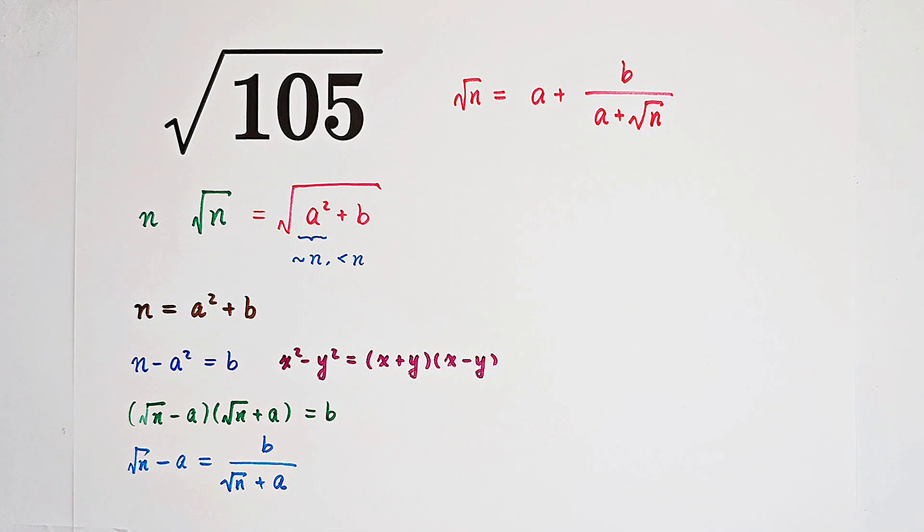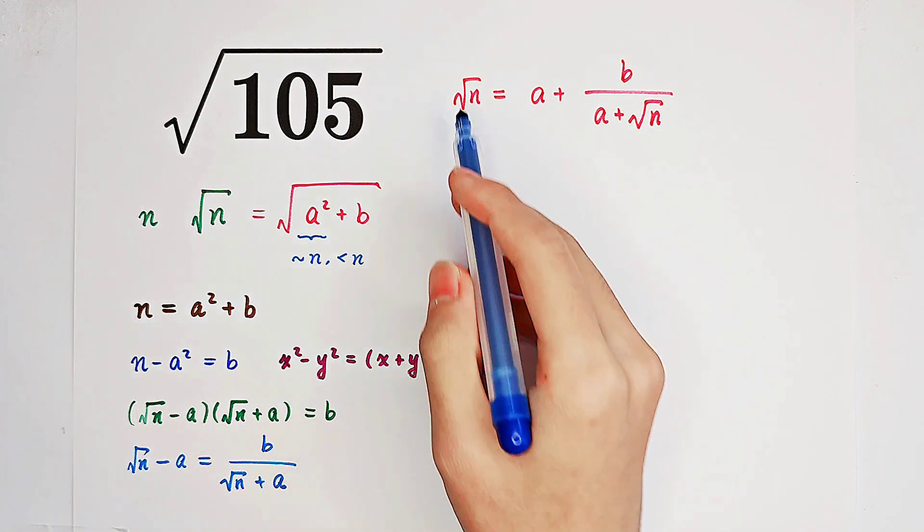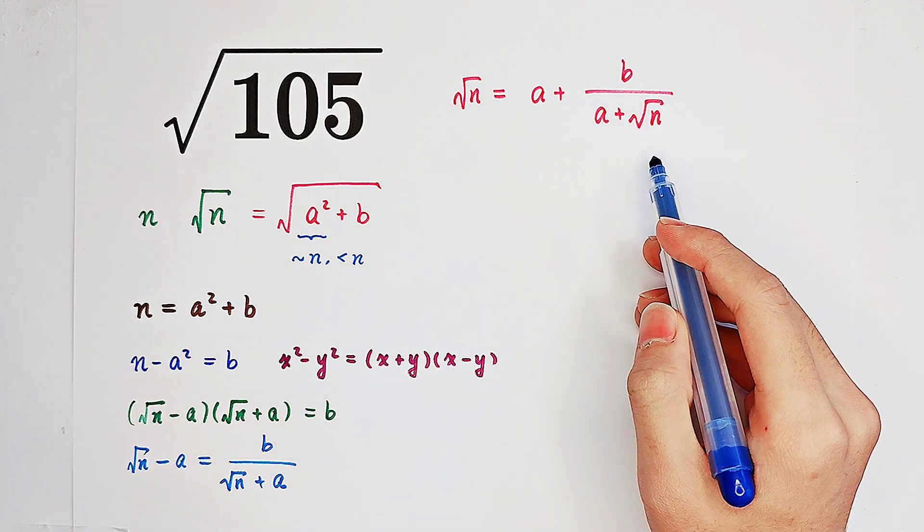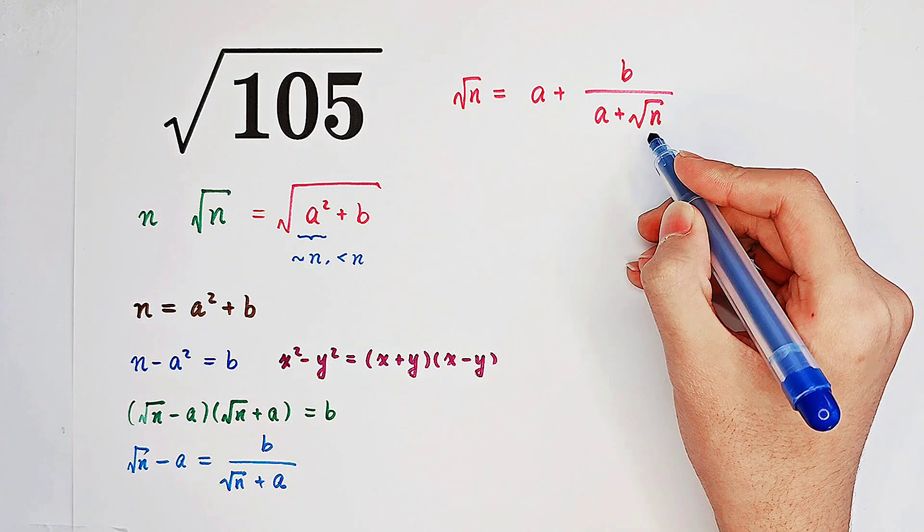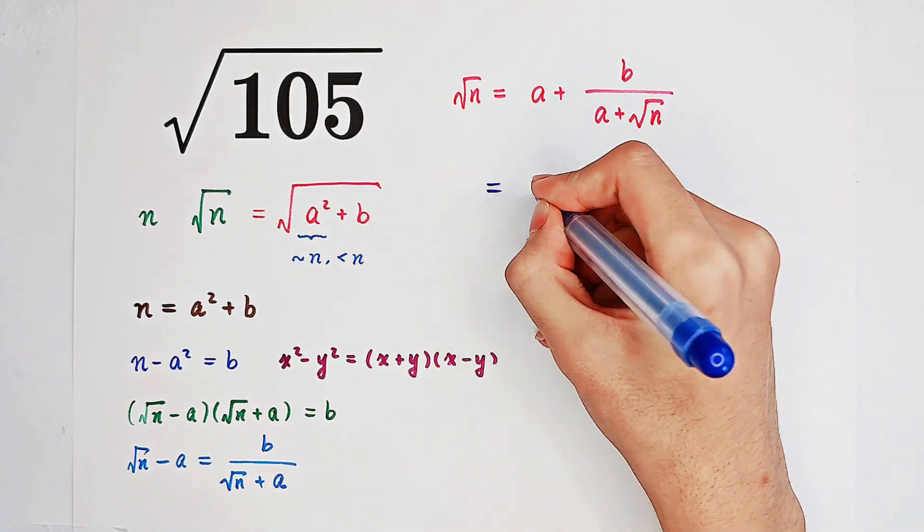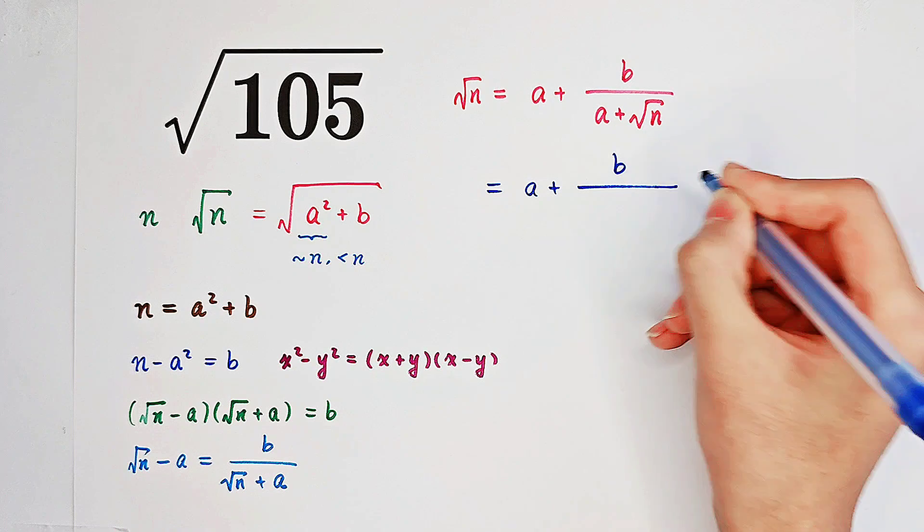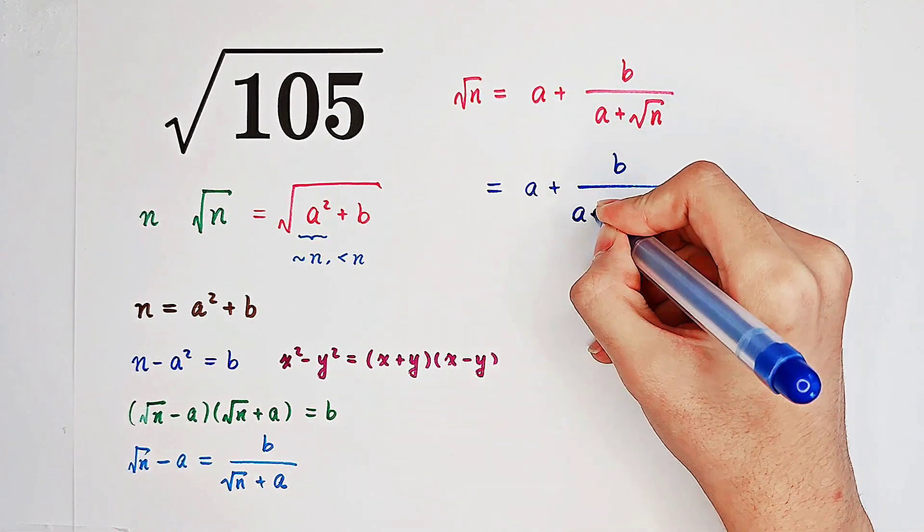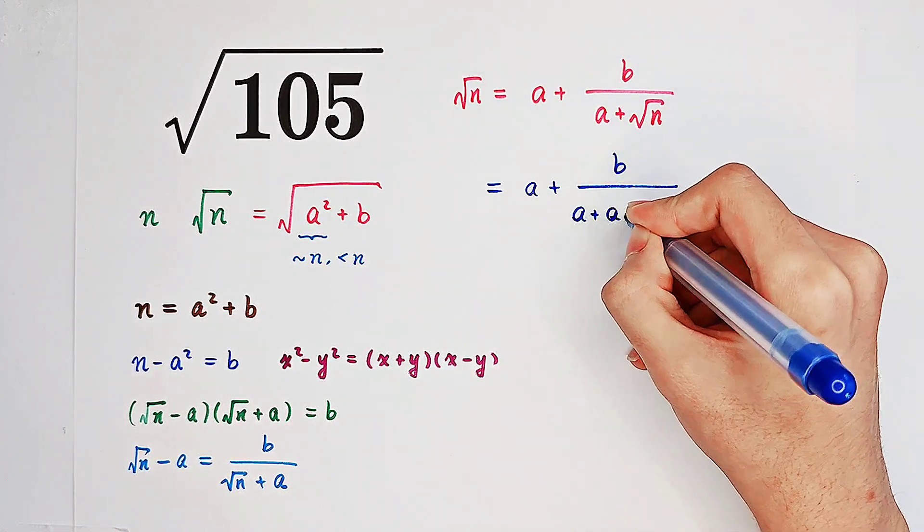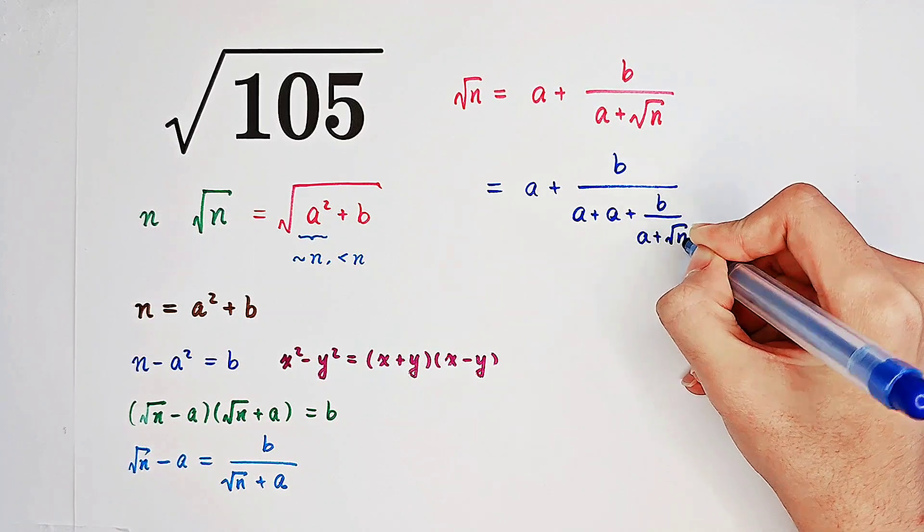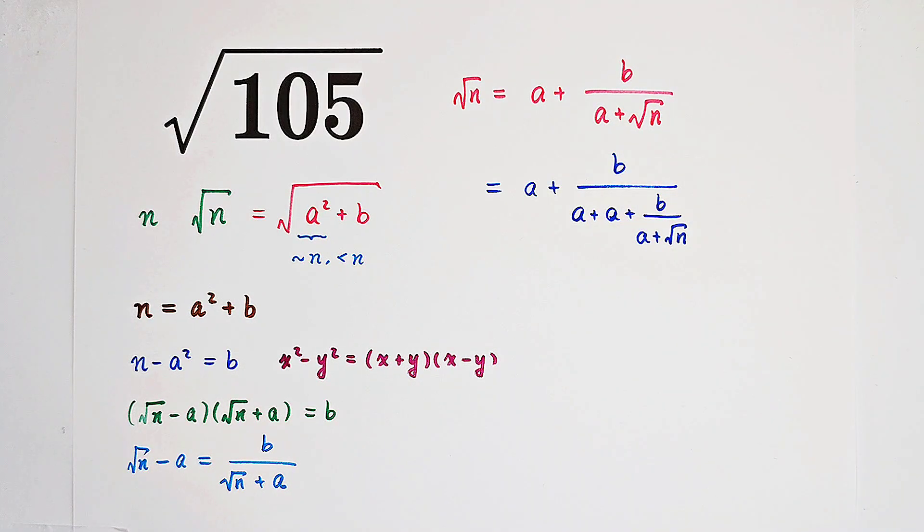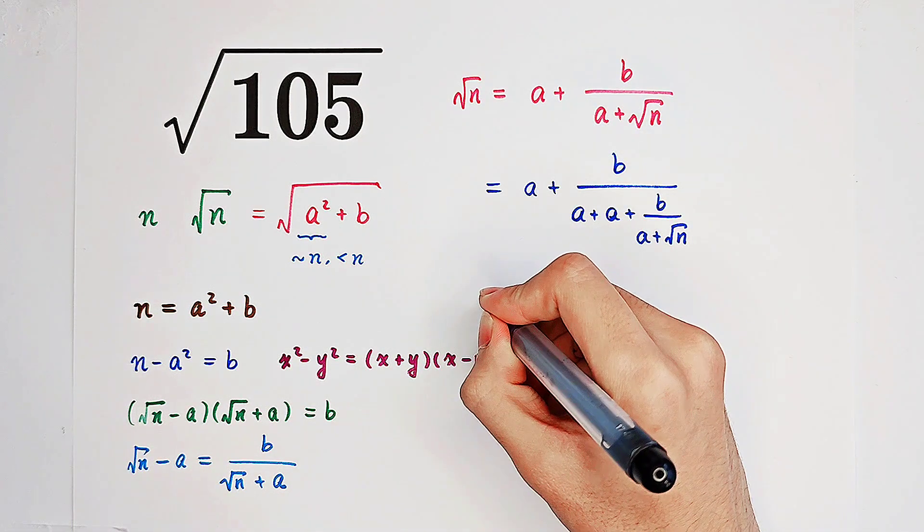Now, what shall we do next? We just substitute square root of n equal to this for square root of n over here. That means it is just a plus b over our square root of n is equal to this guy. So what can we do next? We can do the substitution again and again. We're gonna end up with a very good approximation.